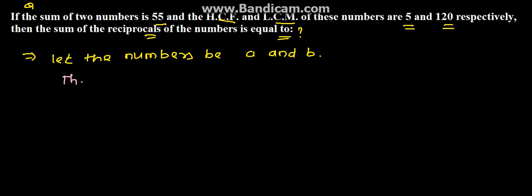Now we know that the sum of these two numbers is 55, so A plus B equals 55. We also know that A times B equals 5 times 120.